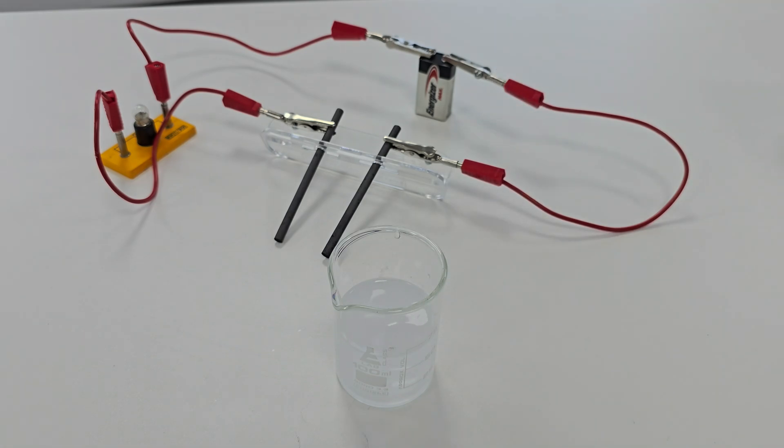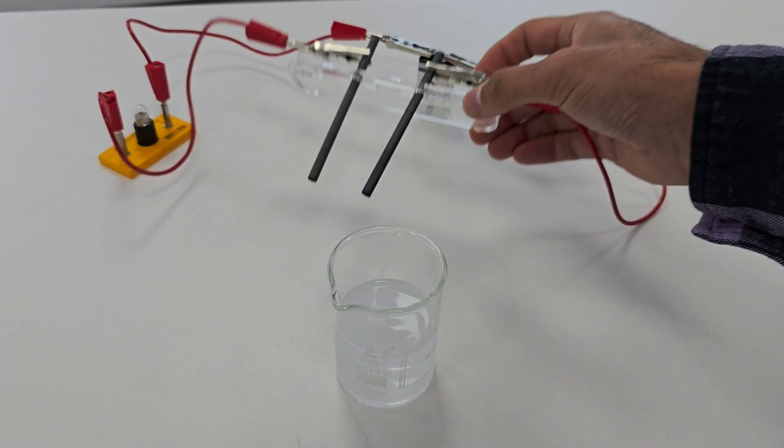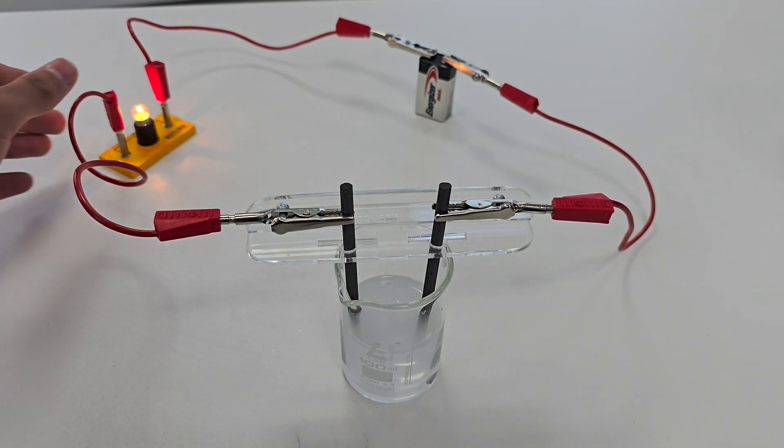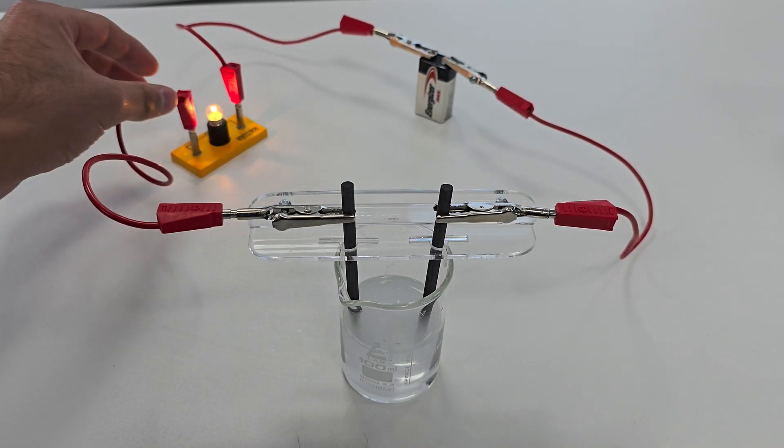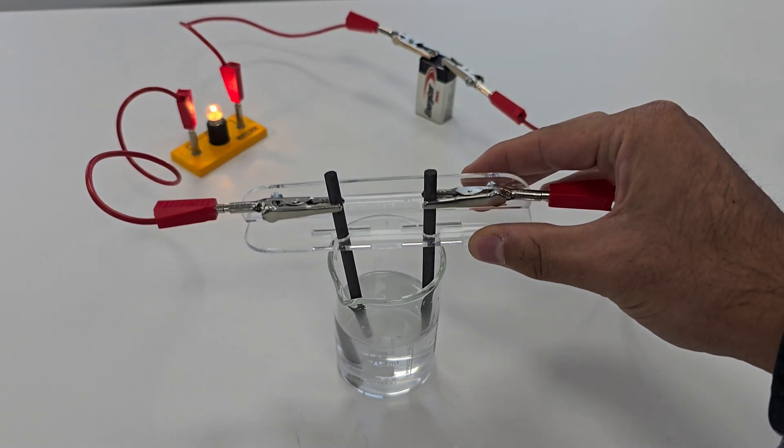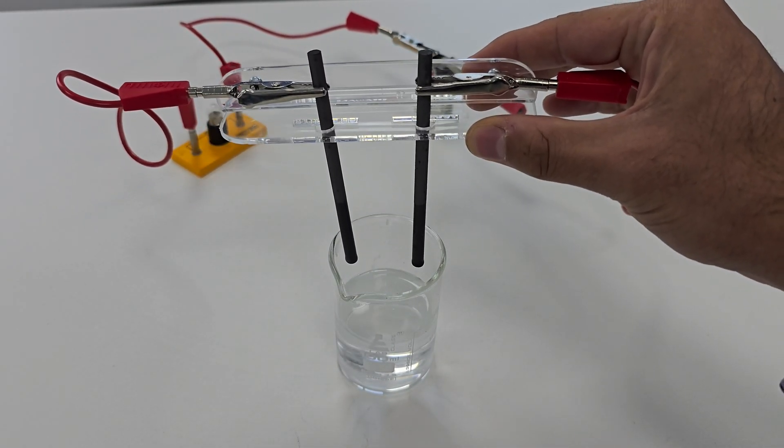Let's test the solution. As I lower the electrodes into the liquid, the bulb lights up. This shows that the solution conducts electricity. Watch as I lift the electrodes out and put them back in. The bulb goes on and off. The electrical conductivity depends on the presence of the free ions in the solution.